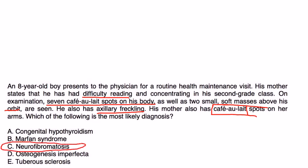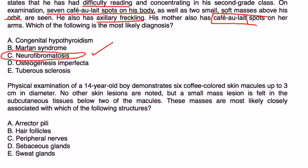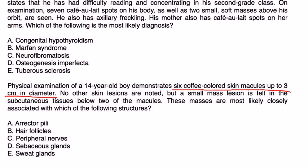Another vignette: Physical exam of a 14-year-old boy demonstrates six coffee-colored skin macules up to 3 cm in diameter. A small mass lesion is felt in the subcutaneous tissues below two of the macules. These masses are most likely closely associated with which structures?